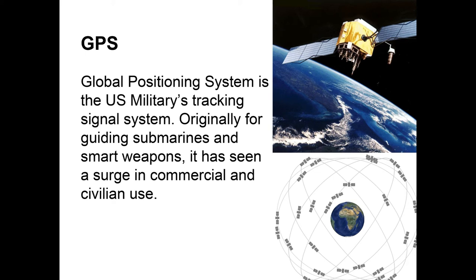GPS is another piece of consumer infrastructure that has crossed a chasm. It started as tracking signals for the US military, primarily for guiding submarines and later smart weapons. When access to the GPS system was enabled for civilians from the 1980s onward, it saw increasing use — first as a surveyor's tool, for ships and aircraft, then later in everyone's cell phones, nav units on cars, fleet maintenance, and tracking devices. GPS is a real success story in terms of this kind of chasm crossing.